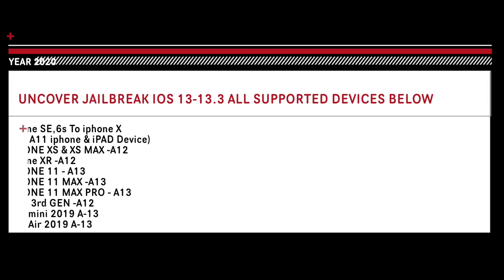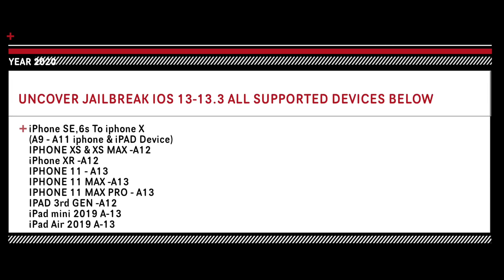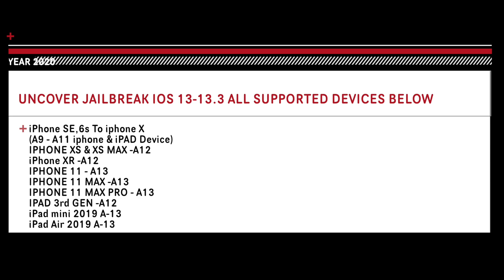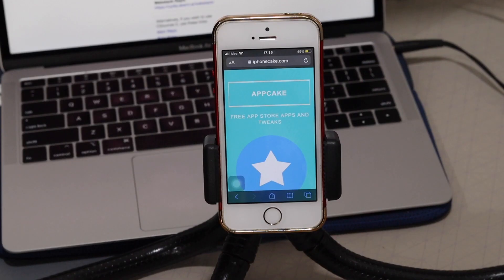Before we begin, let's talk about which devices are supported. These are the devices supporting the unc0ver jailbreak method — you should be on iOS 13 to 13.3, from the iPhone SE and 6S all the way up to iPhone 11 Pro Max, covering A9 to A13 devices.